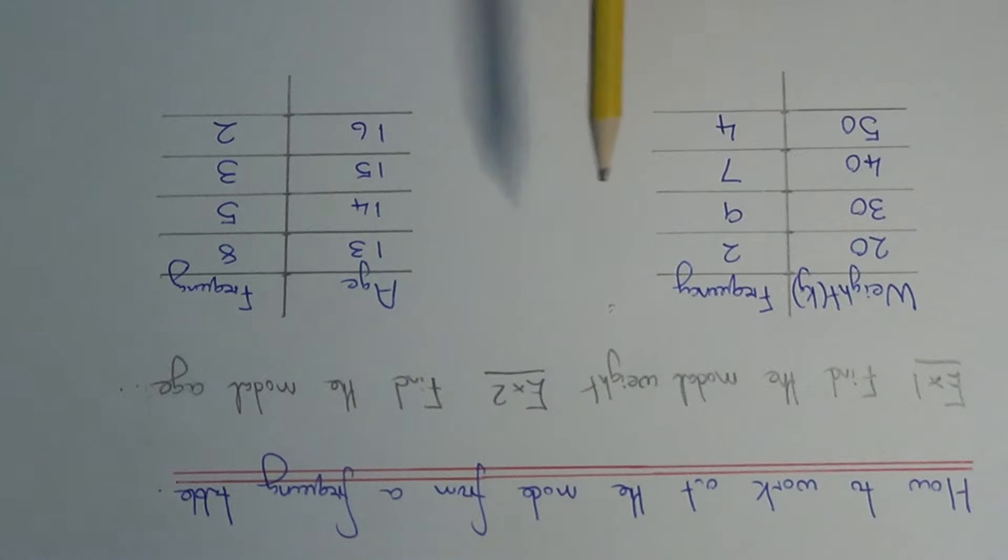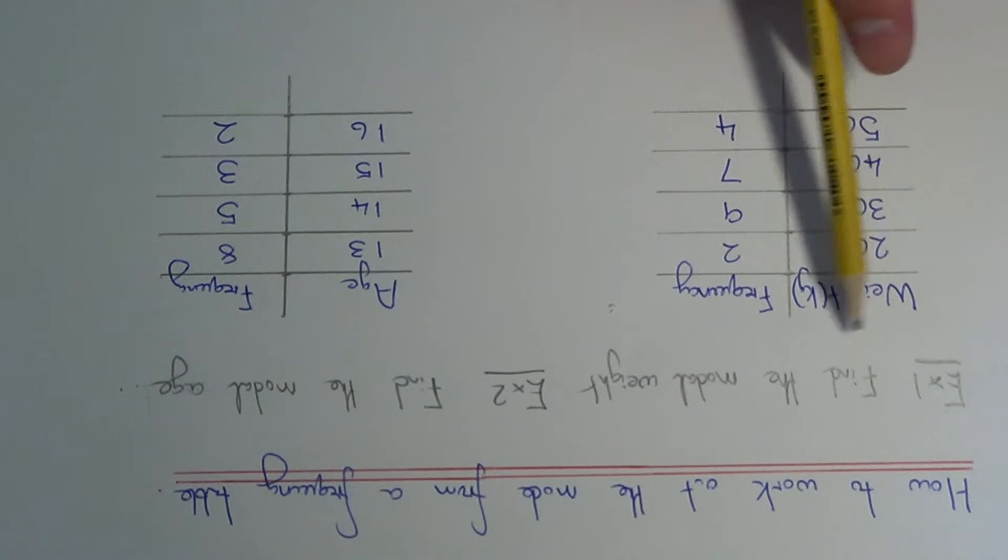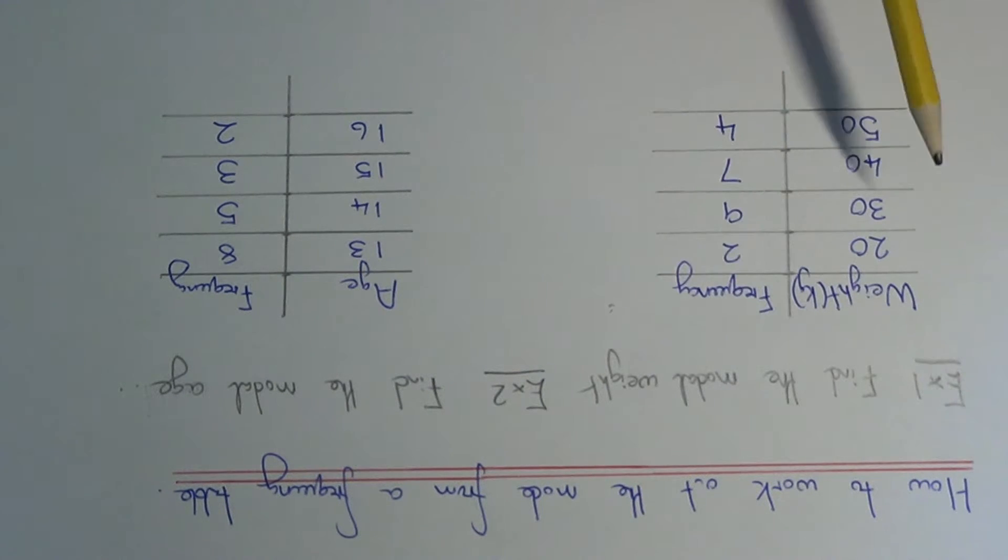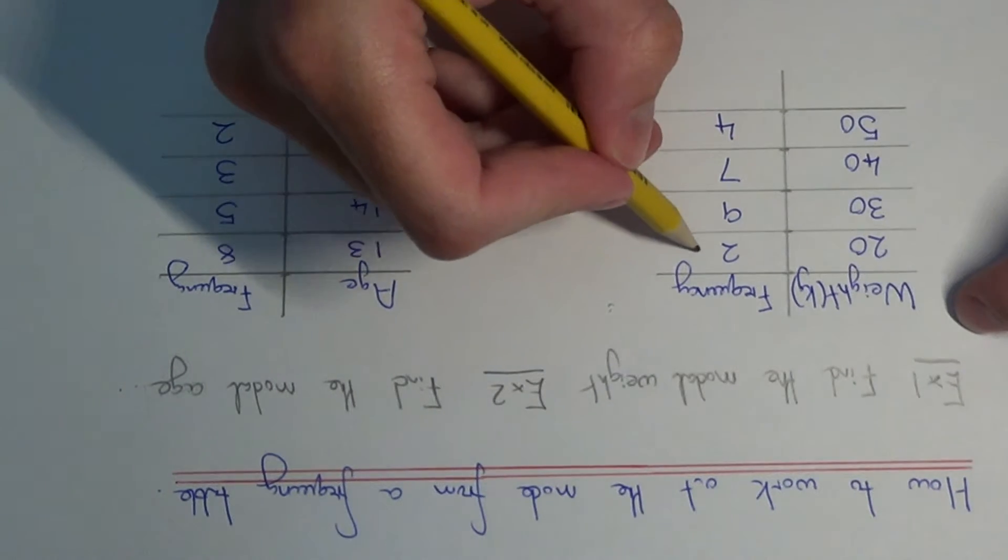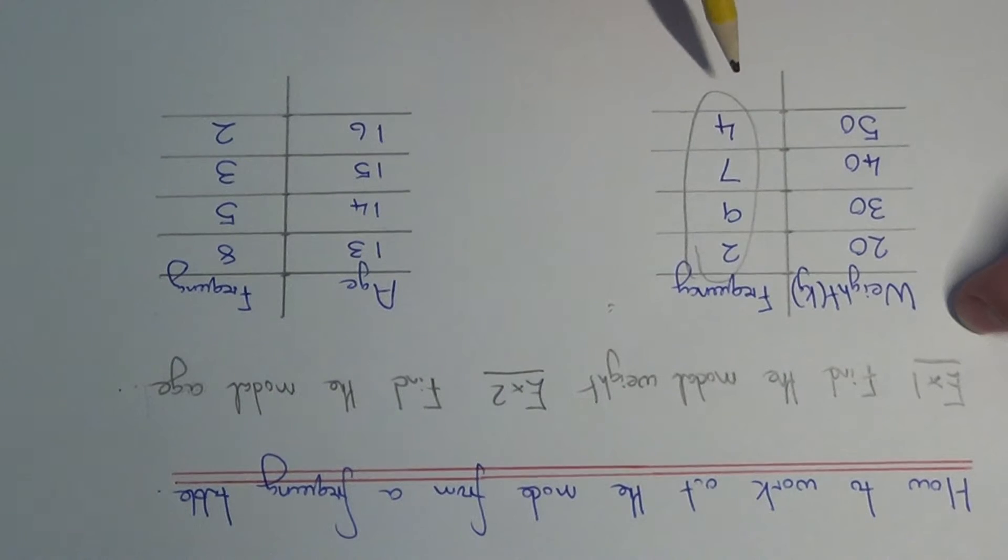So let's look at our two examples. In example one, we need to find the modal weight. We just need to look at our frequency column and see which one is the highest. Our highest number is 9, so that means our modal weight is 30 kilograms. And that's your final answer.